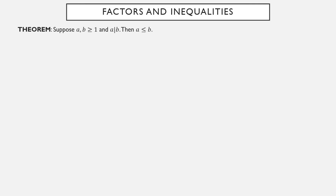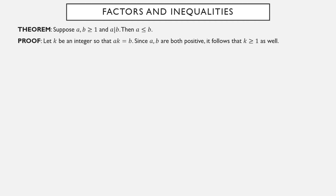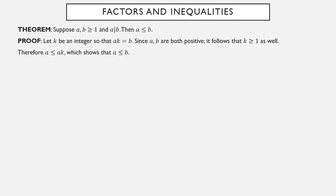Factoring works quite nicely with inequalities. Suppose a and b are positive integers and a is a factor of b — then a ≤ b. Factors of an integer are not larger than it, as long as we're talking about positive numbers. Since a is a factor of b, there is an integer k so that a times k equals b. Since a and b are both positive, k must be positive and therefore k ≥ 1. So a ≤ a times k, and since a times k equals b, we get a ≤ b.